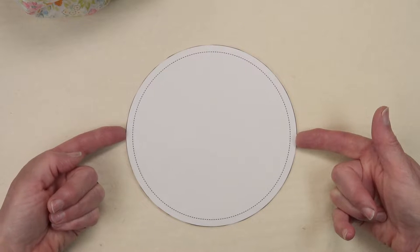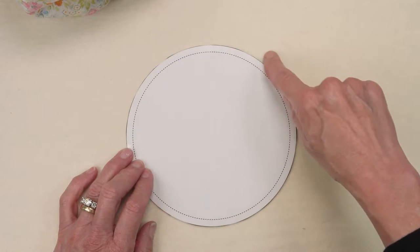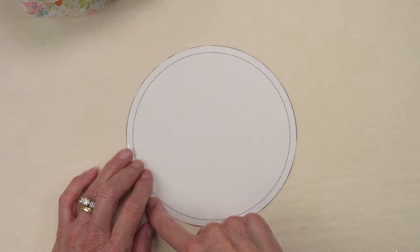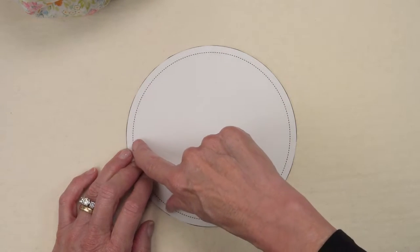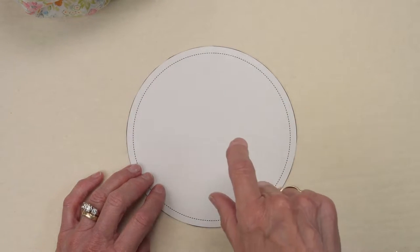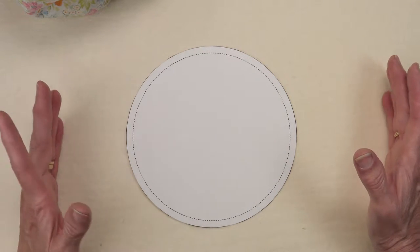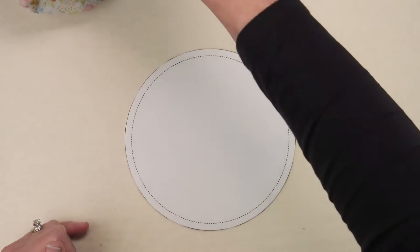I asked Google what the circumference of a six and a half inch circle is. And Google told me it was almost 20 and a half inches. That's how I knew how long to cut that strip.